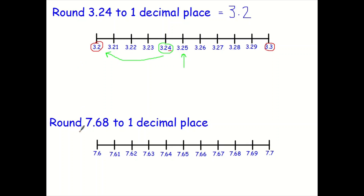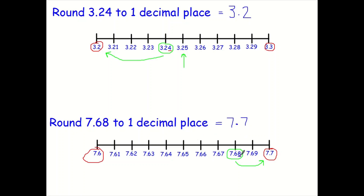Let's have a look at this example: round 7.68 to one decimal place. To one decimal place, you have to pick one of these two numbers — 7.6 or 7.7. Where is 7.68? It's here, and you can see it's much closer to 7.7. So rounding 7.68 to one decimal place gives 7.7. Why? The digit in the second decimal place is 8 — that's five or more, so we let it soar up to 7.7.